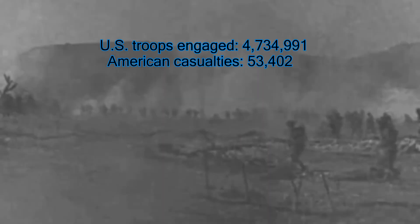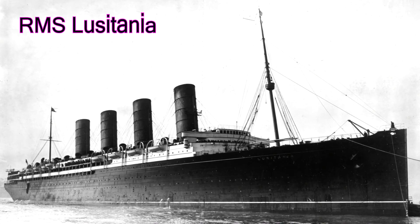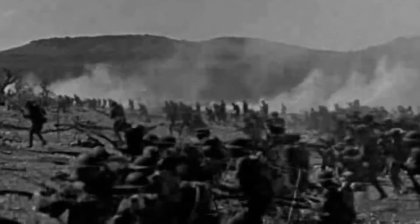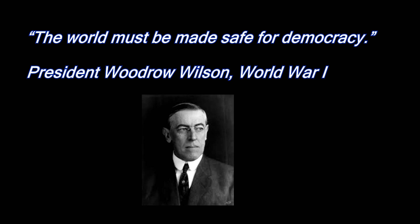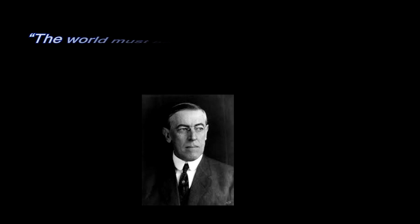Next is World War I — the biggest US war involvement up to that point. The war ran from 1914 to 1918, but the US was only involved from 1917 to 1918. US troops engaged: 4.734 million; American casualties: 53,402. The US joined the Allies — Britain, France, Russia, Italy, and Japan — against the Central Powers of Germany, Austria-Hungary, and Turkey, after German submarines began sinking unarmed ships, notably the Lusitania. The war was largely characterized by trench warfare. The Treaty of Versailles was signed in 1919. President Woodrow Wilson's famous quote: 'The world must be made safe for democracy.'